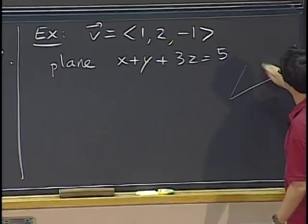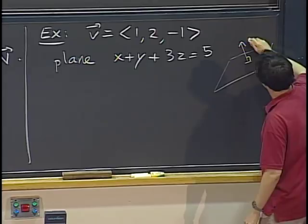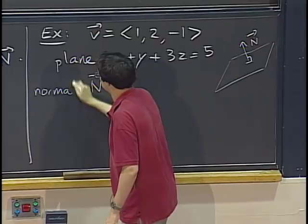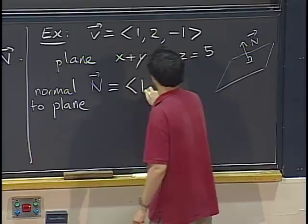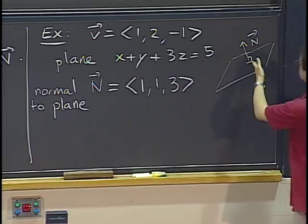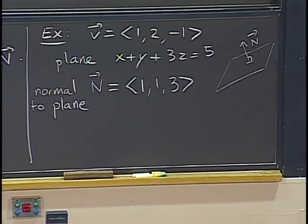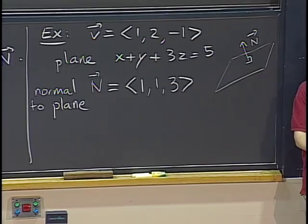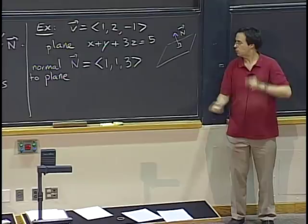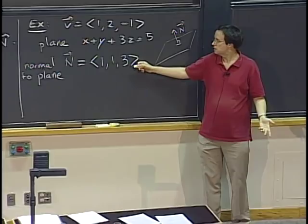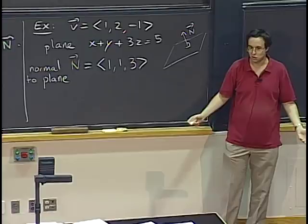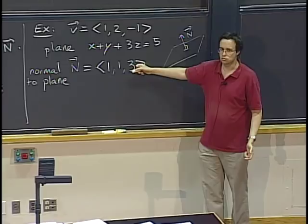Let v = (1, 2, -1) and the plane be x plus y plus 3z equals 5. To get a normal vector to the plane, take the coefficients of x, y, and z: that's (1, 1, 3). So (1, 1, 3) is perpendicular to the plane. All other perpendicular vectors are parallel to each other — just multiples of this. Since v = (1, 2, -1) is not proportional to (1, 1, 3), v is not perpendicular to the plane.